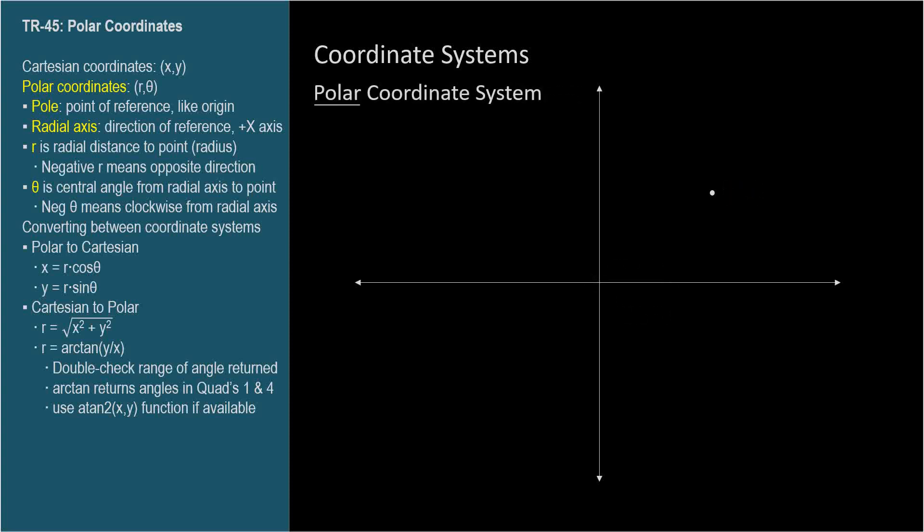Another system is the polar coordinate system. It also needs a reference point and a reference direction. The reference point is called the pole, and the reference direction is called the polar axis. The polar axis is often drawn in the same direction as the positive x-axis.